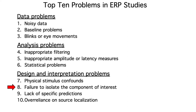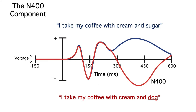Now let's move to another common design problem: failing to isolate the ERP component of interest. Let's consider an example. Remember the N400 component? Stimuli that are semantically incongruous with a previously established semantic context elicit a large N400. So the last word in 'I take my coffee with cream and sugar' doesn't produce much N400 because 'sugar' fits semantically with the rest of the sentence. But if the last word is 'dog,' you get a big N400.